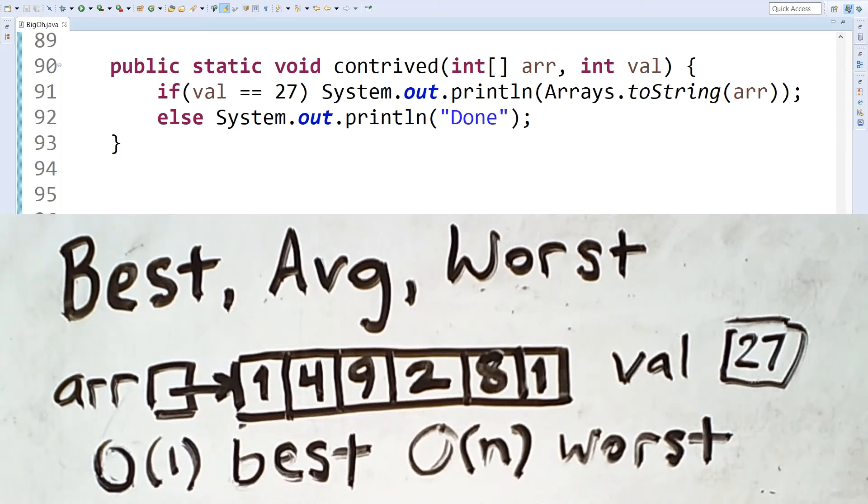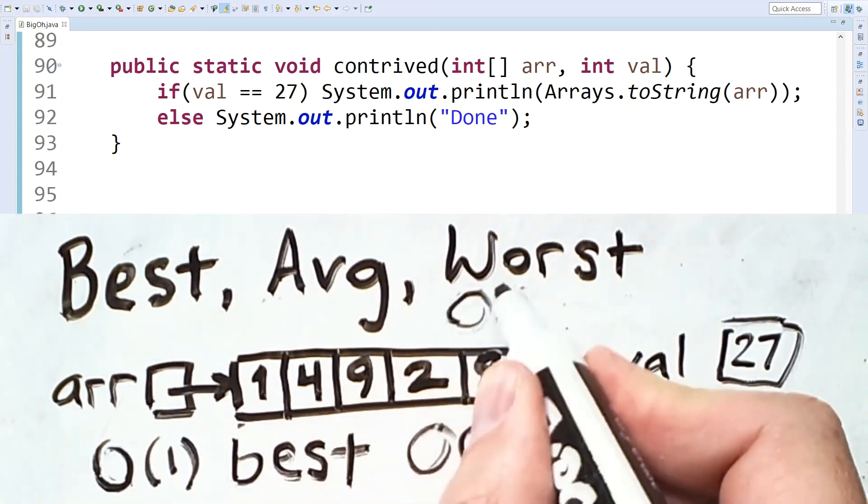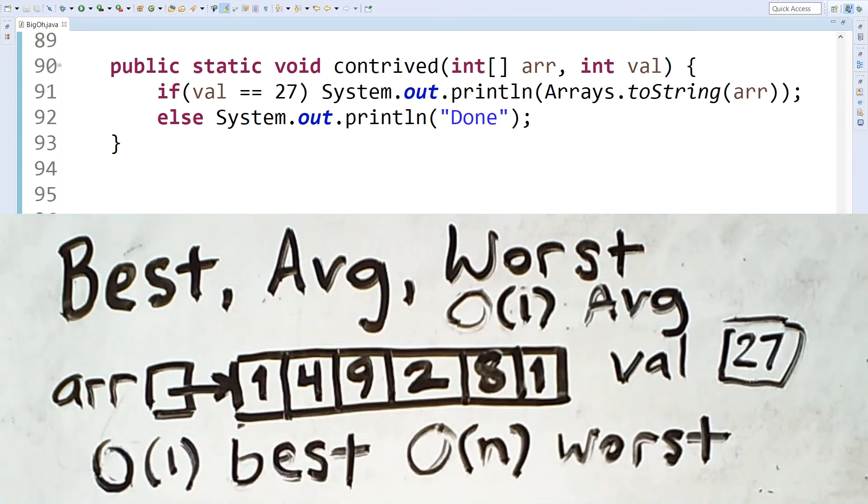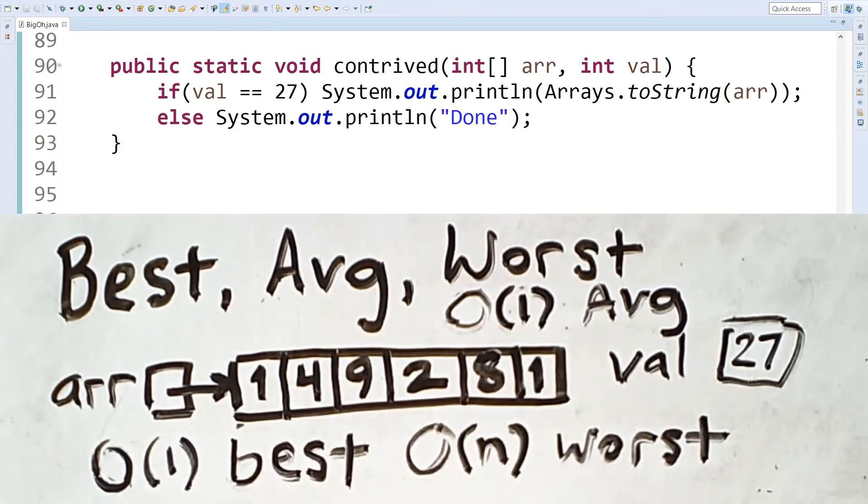But now we get to the average case. And clearly here, most cases will not run in O of n time. There is only one case, when value equals 27, where we have to loop through the entire array to convert its contents to a string. In all other cases, we simply print out a single short string. So, in this example, the average is O of 1. That one case where we execute O of n times is still part of this average, but the impact of that is washed out by the many cases that execute in constant time.